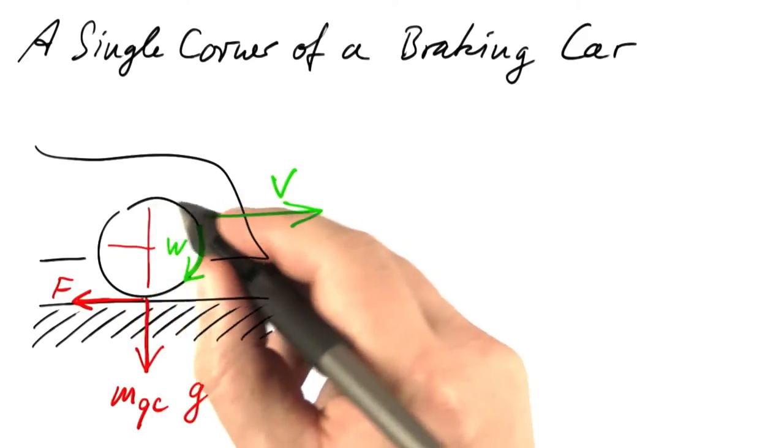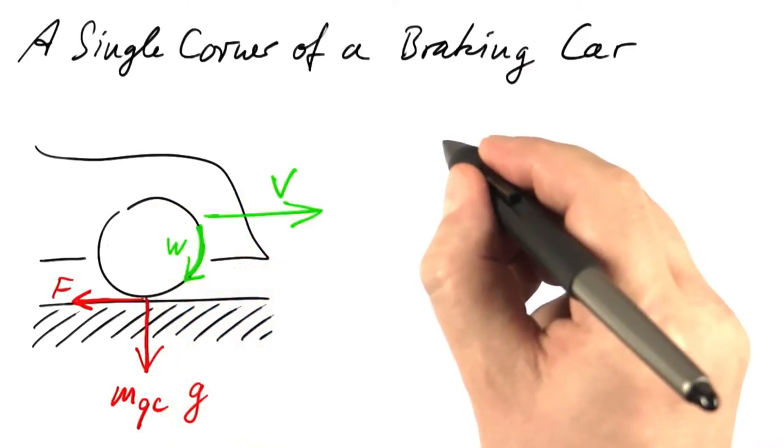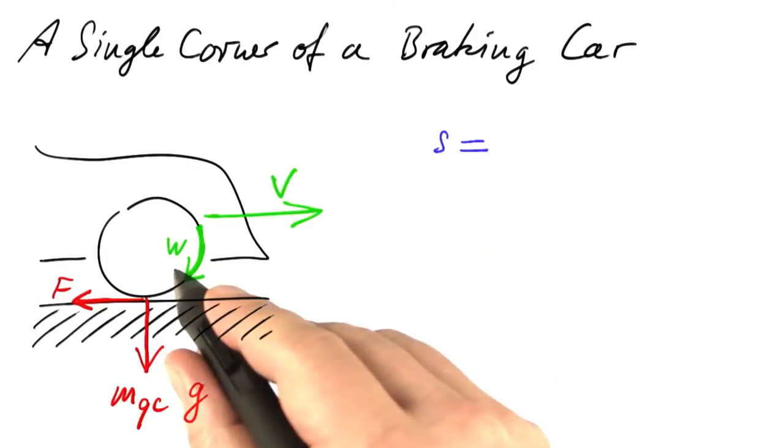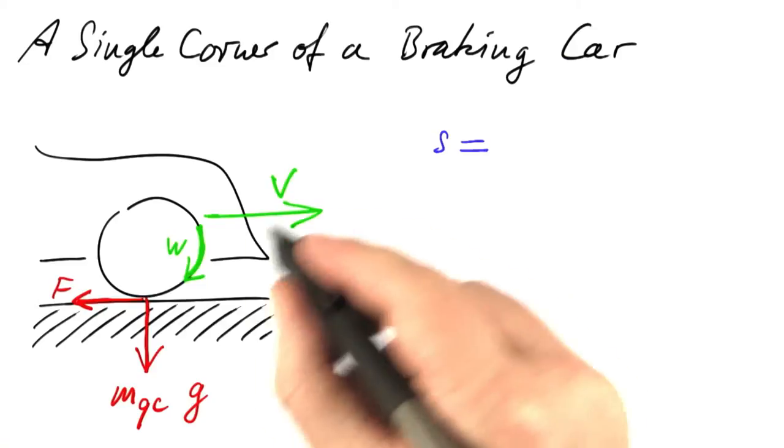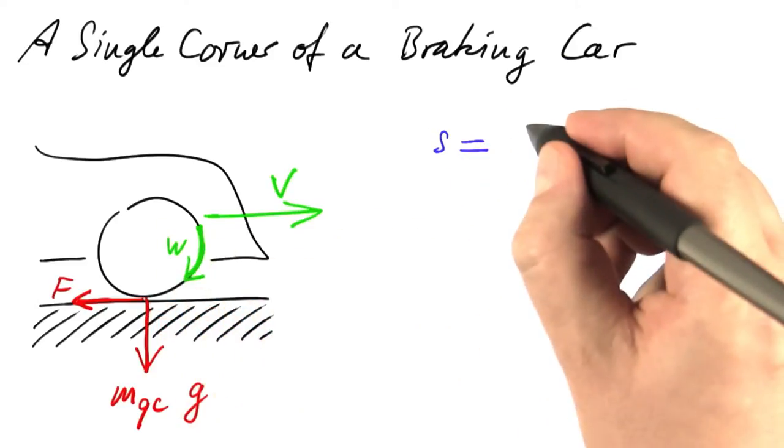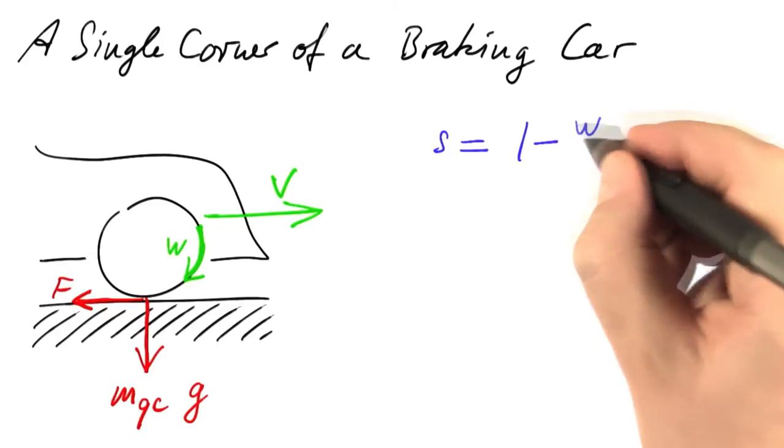The first thing to be computing is the wheel slip, S, and given these two velocities, the velocity of the car and the velocity of the rim of the wheel, we can compute the wheel slip by 1 minus W over V.